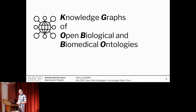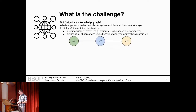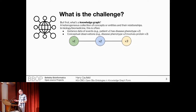How many people in this room are familiar with OBO Foundry by show of hands? The majority of people, but not everybody, so that's okay. So what's the kind of challenge that we're dealing with? That first initial challenge is: what's a knowledge graph to begin with? I'm just gonna define it as a heterogeneous collection of concepts or entities and their relationships.